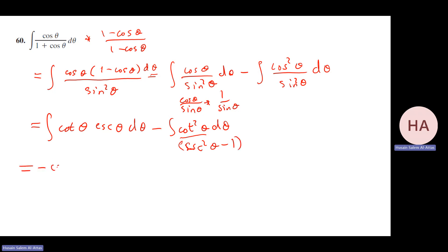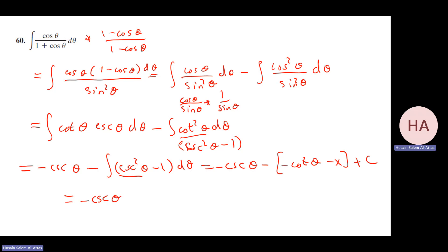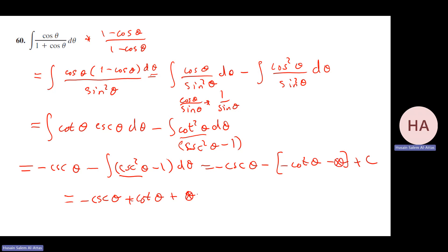Integrating: ∫ cot θ csc θ dθ = -csc θ, and ∫(csc²θ - 1)dθ = -cot θ - θ. So the full result is -csc θ minus (-(-cot θ) - θ) + C, giving: -csc θ + cot θ + θ + C.